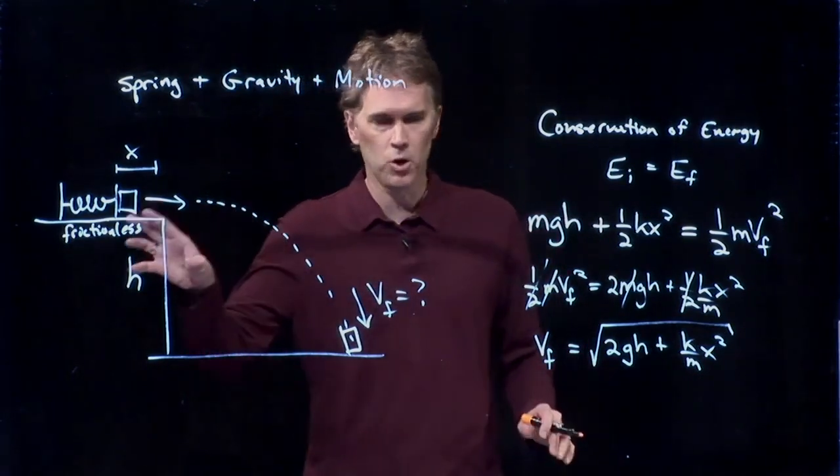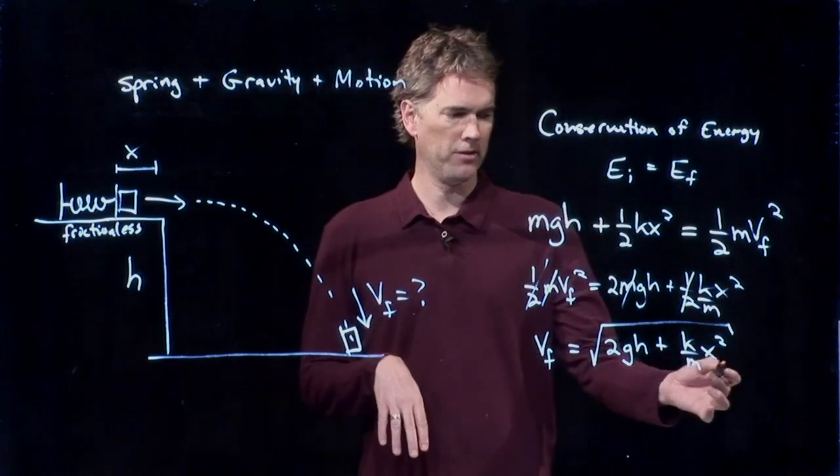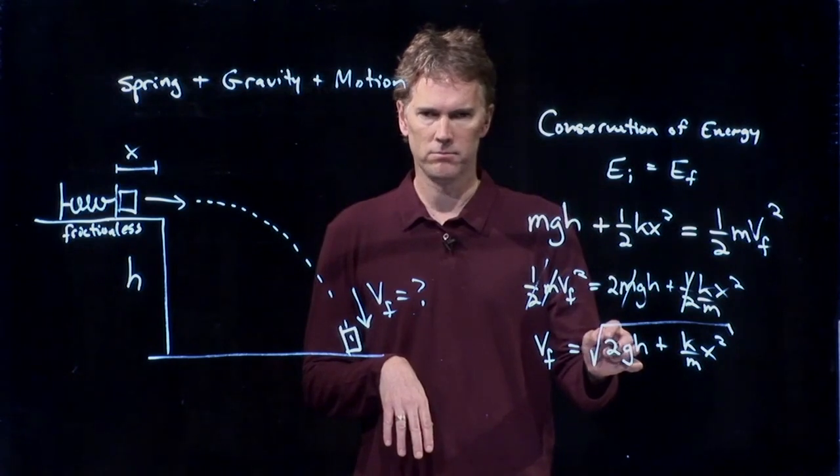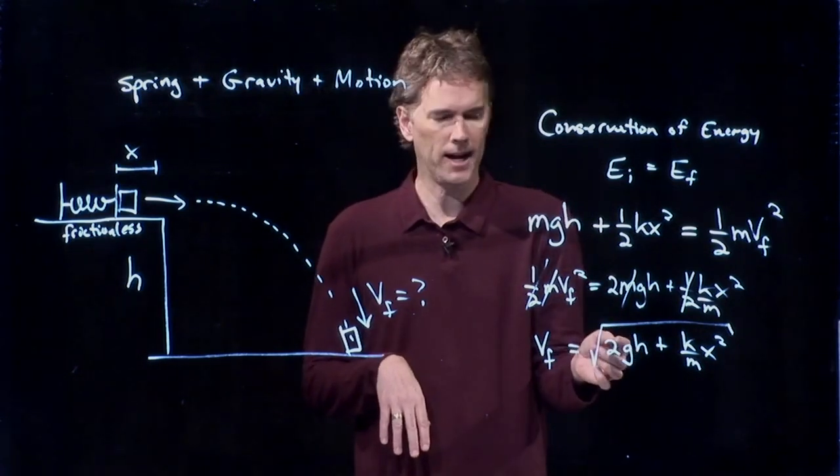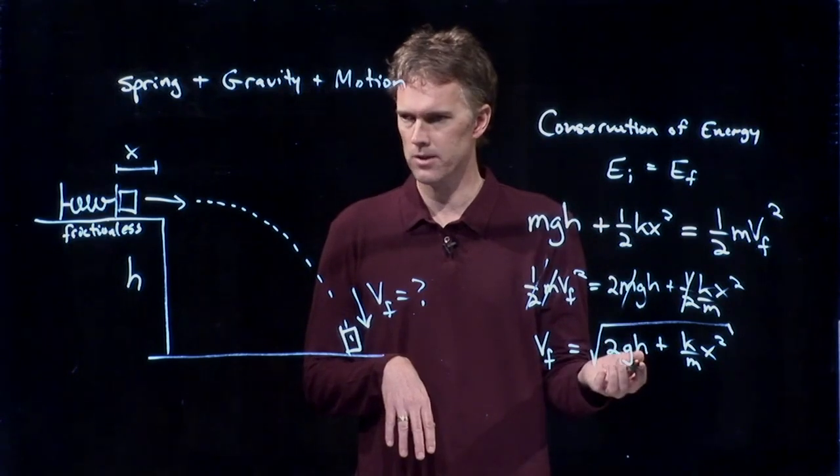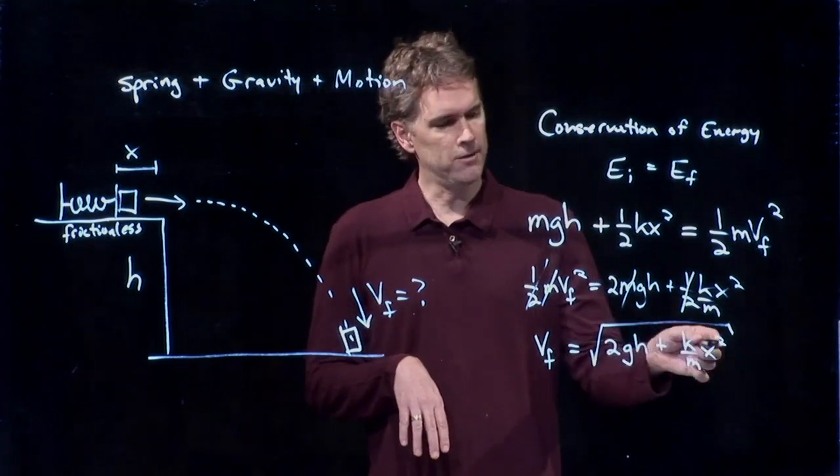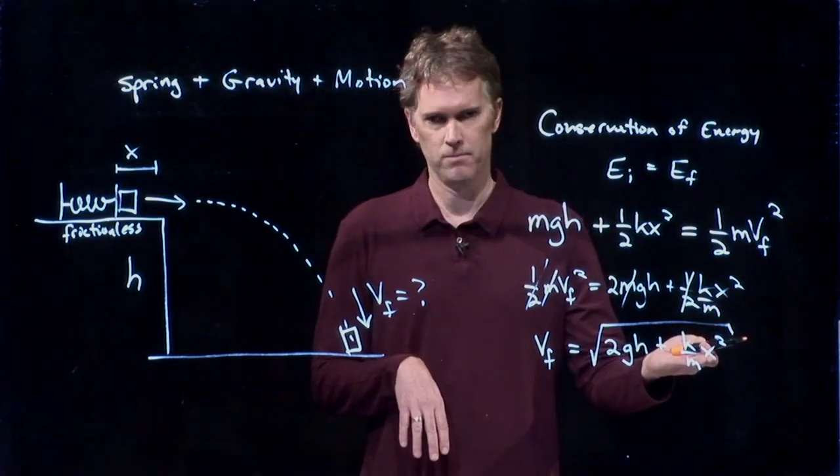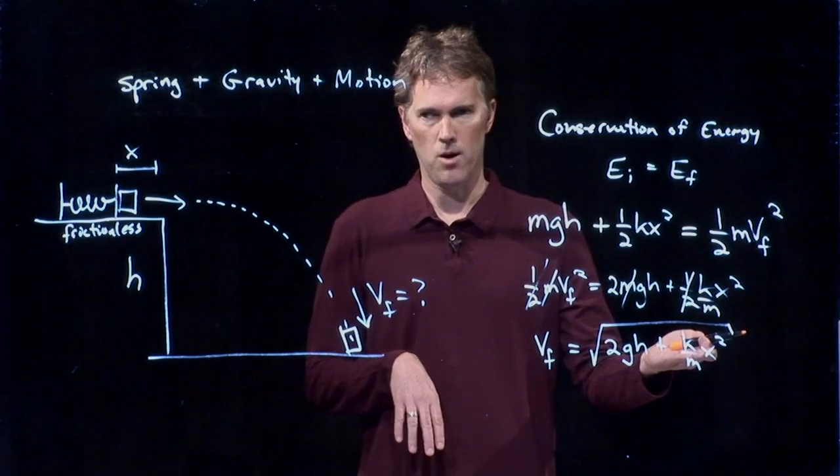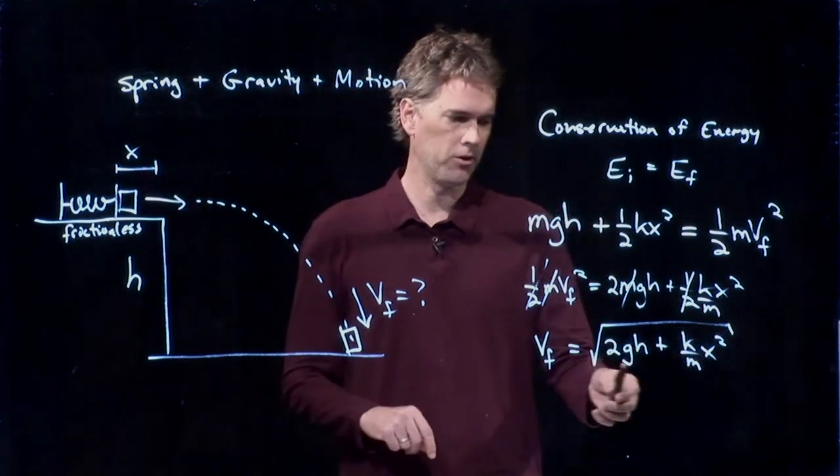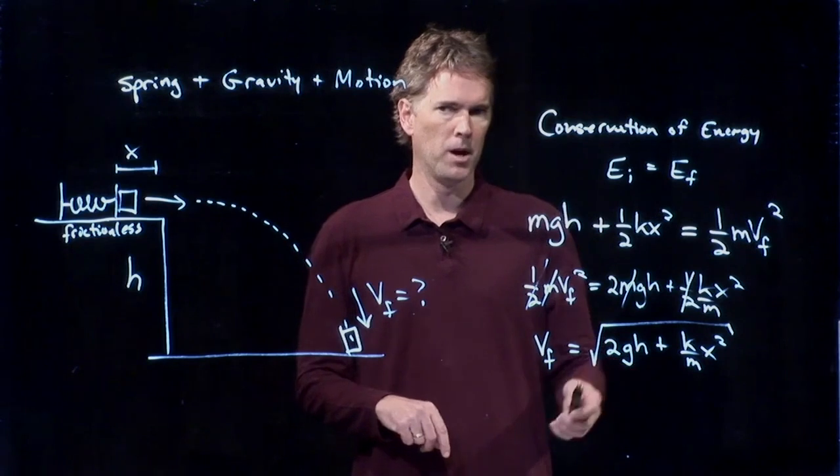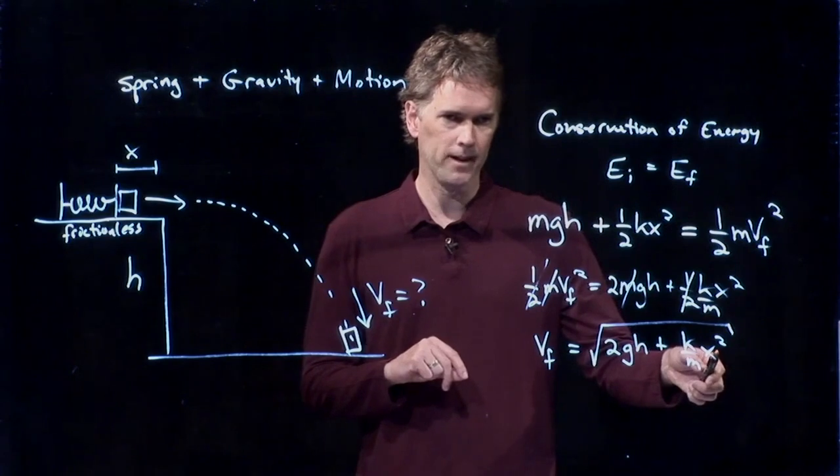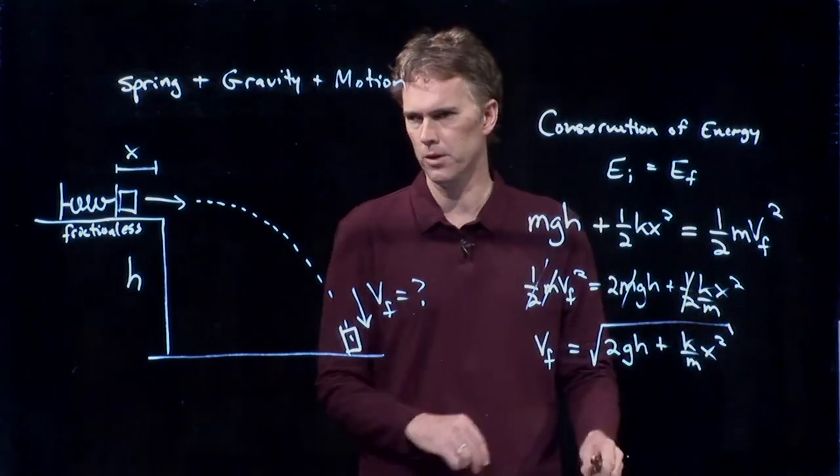So if there was no compression of the spring, then this term goes away. Everything is due to the height. And we know when things fall from a height, they hit the ground at square root of 2gh. But if we have some compression of the spring, we have to include that term in there. Now, obviously, if it's really, really high, then this term will dominate. But if it's kind of low and you compress the spring a lot, then this term will dominate. And so there's a balance between those two.